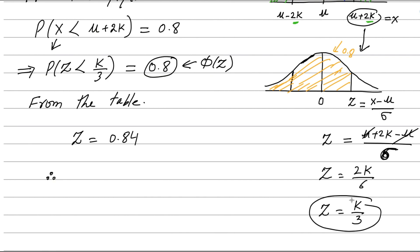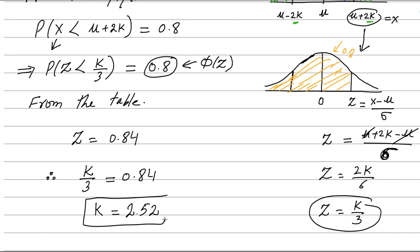We already have Z equals k over 3, so replacing Z with k/3 and setting it equal to 0.84: multiplying both sides by 3 gives k equals 2.52. This completes the first part.